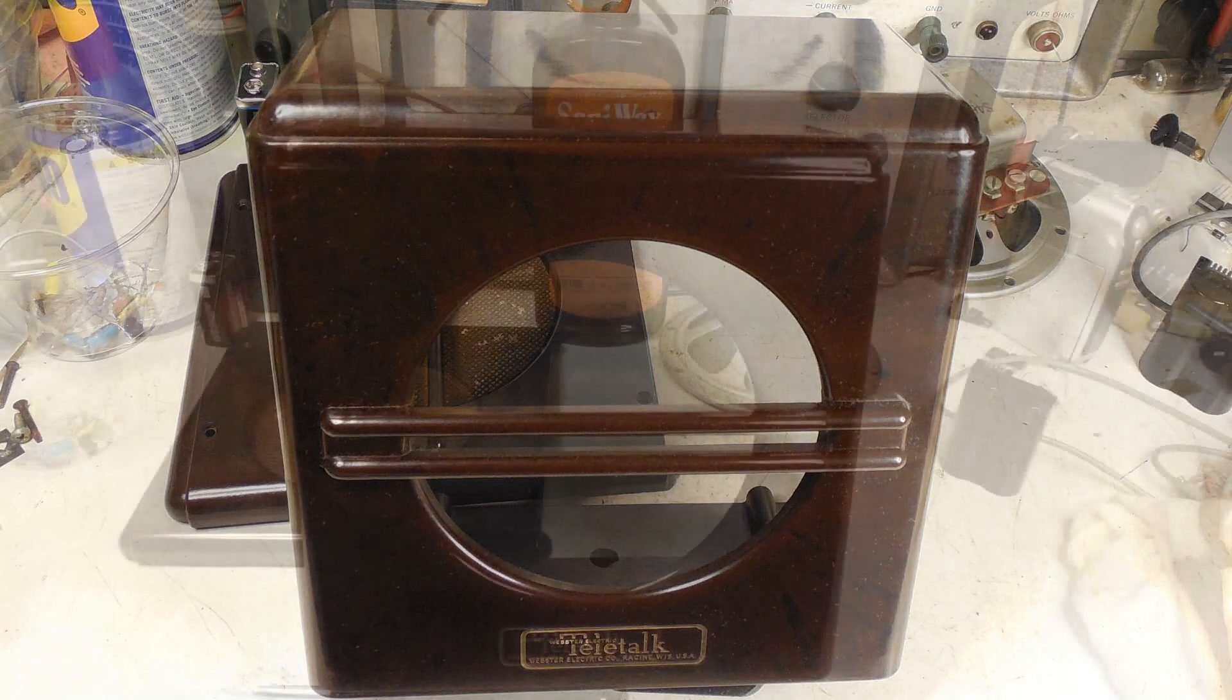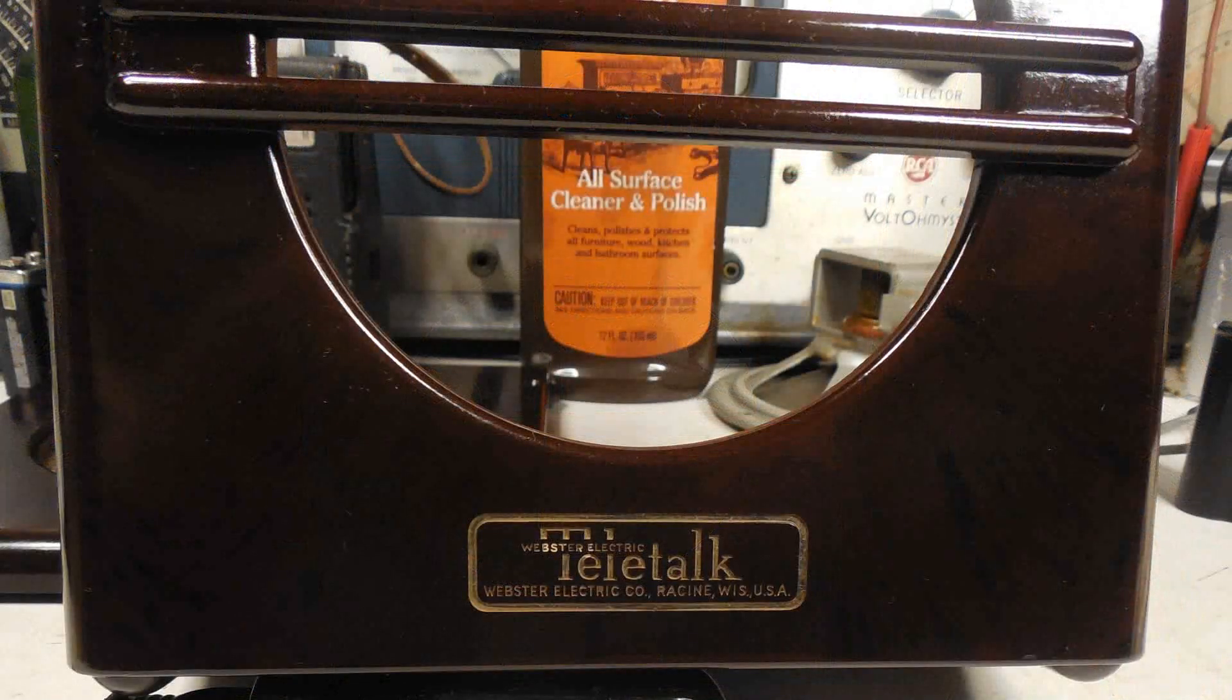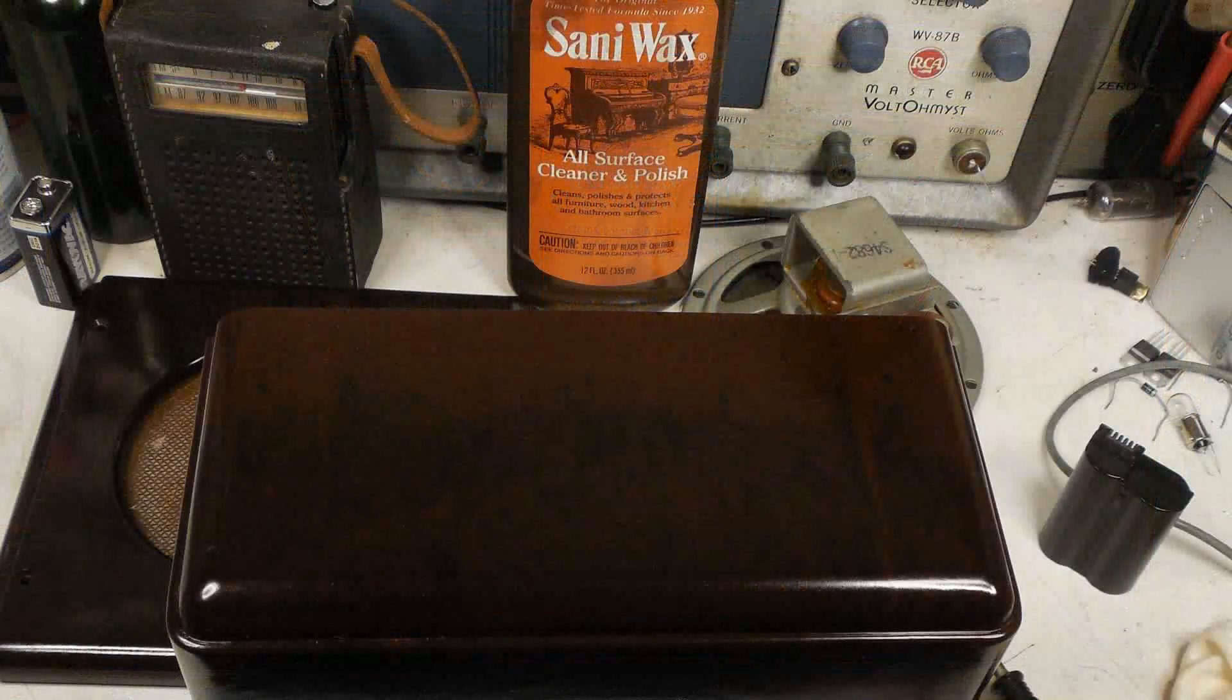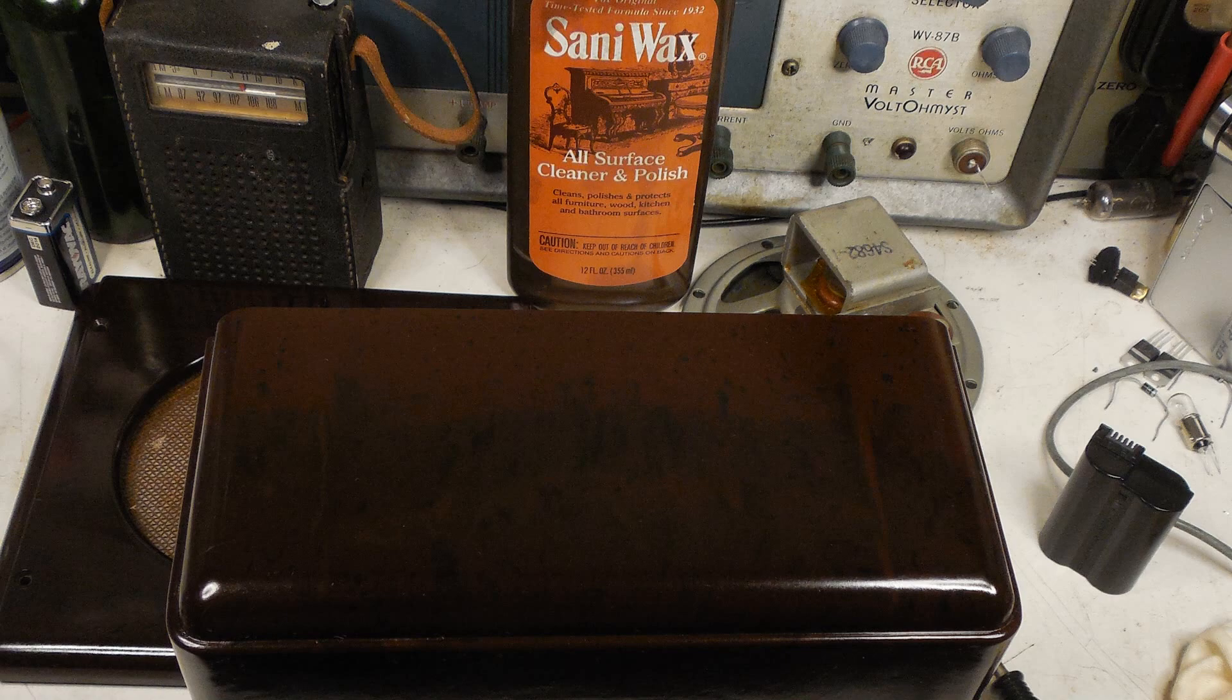Now here I have taken Renaissance wax to this, which also removes any of the excess. And it also helps to put oils back into the Bakelite. And as you can see, this looks like brand new. Looks like a brand new Bakelite cabinet now.